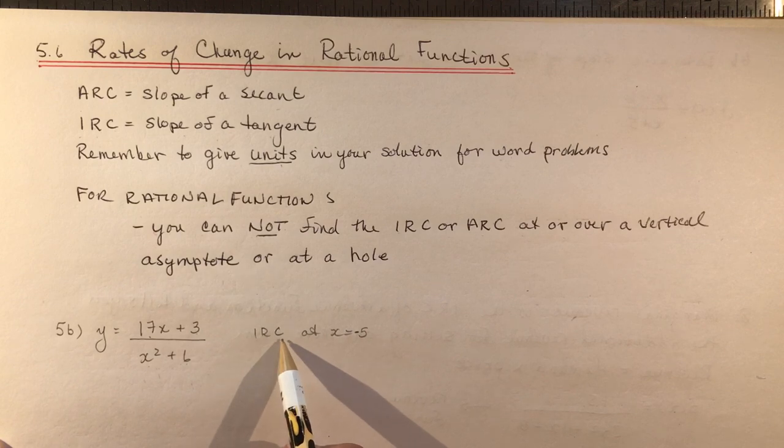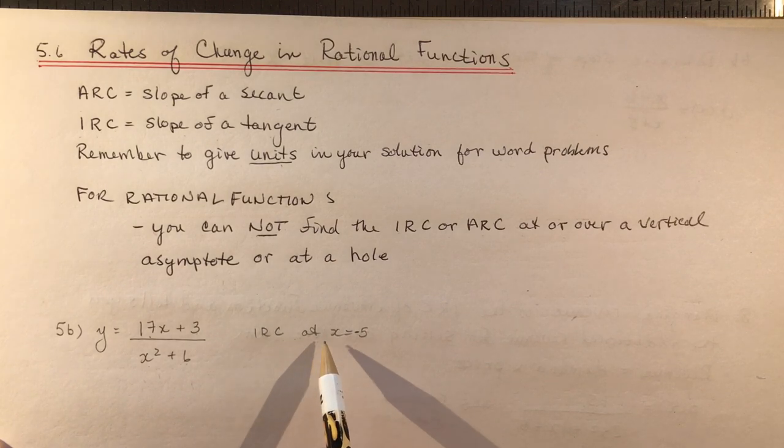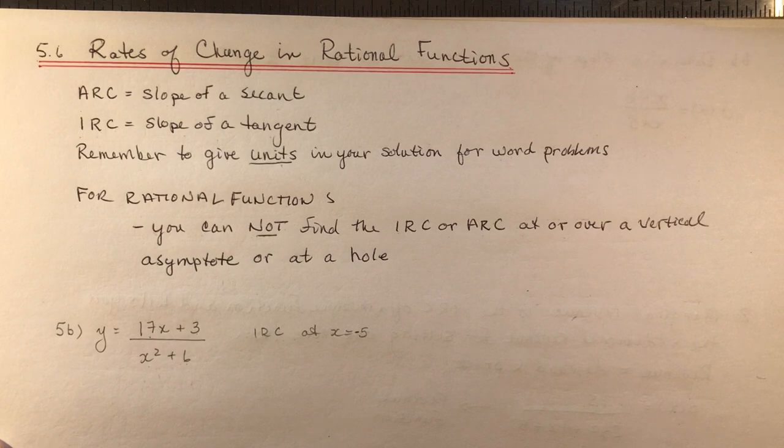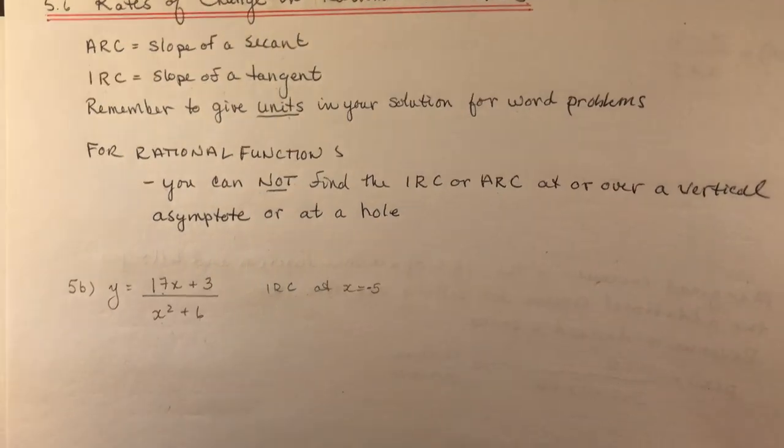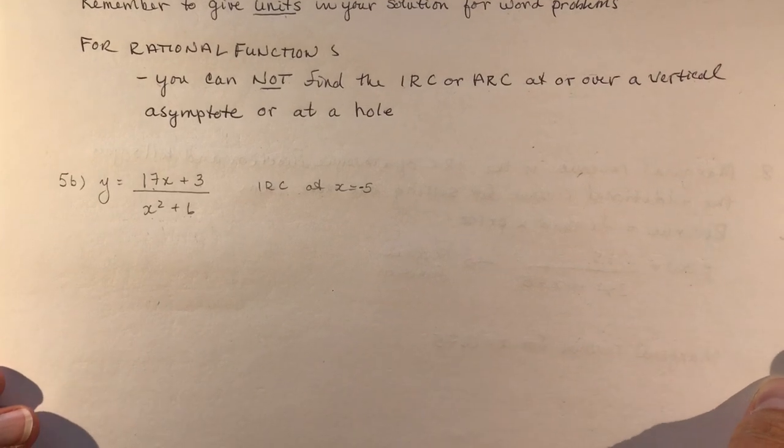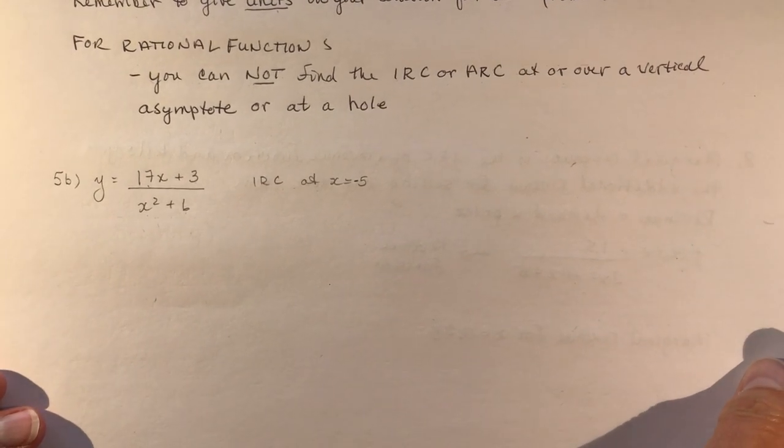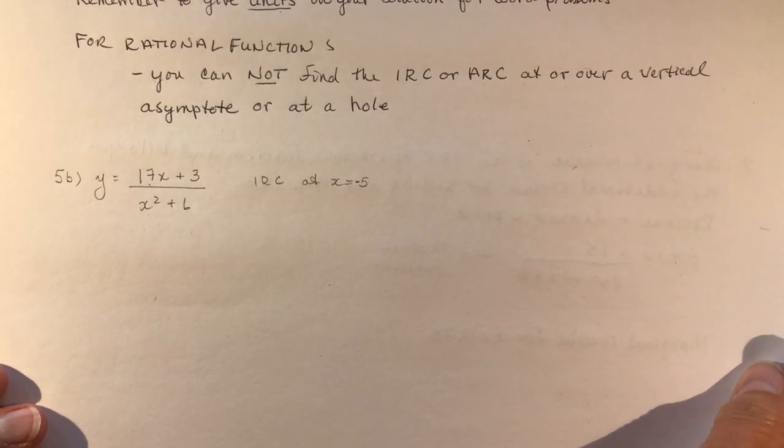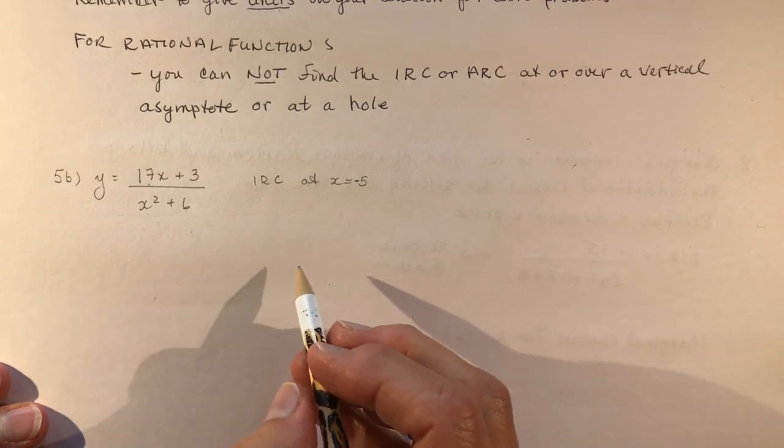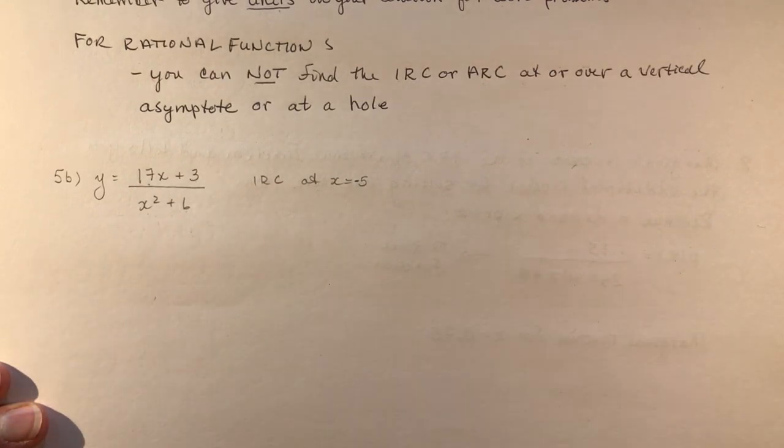It says 17x plus 3 over x squared plus 6. And you want to know what is the instantaneous rate of change at x equals minus 5. So what you're going to do is pick a small interval. In this case, again, you have an equation. So it's pretty easy for you to change the amount or find a number very close to minus 5 that will give you an estimate at that point.